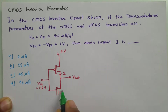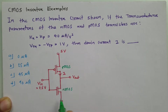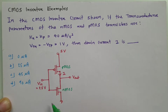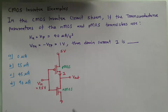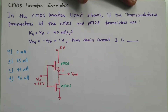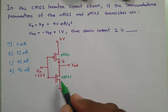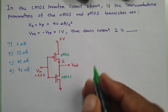Both NMOS and PMOS carry the same current I. We can calculate this current only if we know in which region PMOS and NMOS are functioning. So first we need to identify the operating region using the voltage transfer characteristic, and based on that we can apply the appropriate drain current formula.